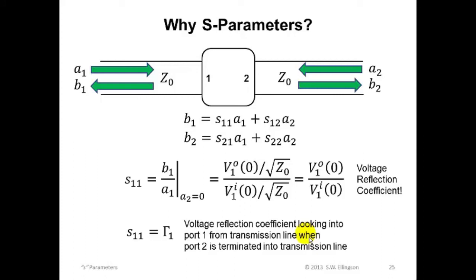The happy fact that S21 magnitude squared just happens to be the forward power gain of a two port is not a fluke. In fact, all of the S-parameters have useful interpretations. We'll go through these in a later lecture, but for now let's just consider one more, and that's S11.